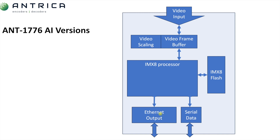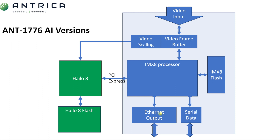Now, if you want to add the AI version, this is an option across two or three different products that we sell. We have a PCI Express interface on the IMX8 processor, and we can effectively add a mezzanine or production build option to add a chip called the Halo 8. The Halo 8 is produced by Hailo and is probably the most powerful AI accelerator processor on the market based on power, size, and performance. There are more powerful AI accelerators, but they tend to be much bigger and draw significantly more power. We needed a chip that was physically very small, and the Halo 8 fits that perfectly.